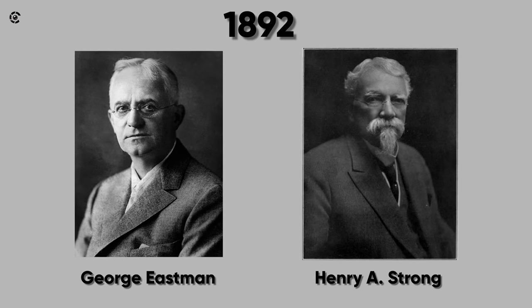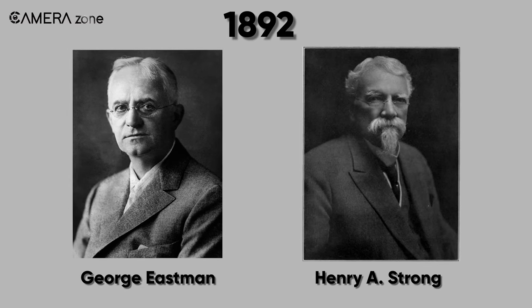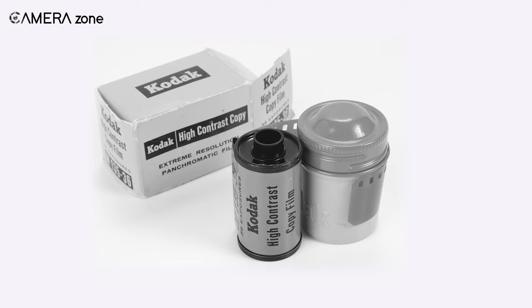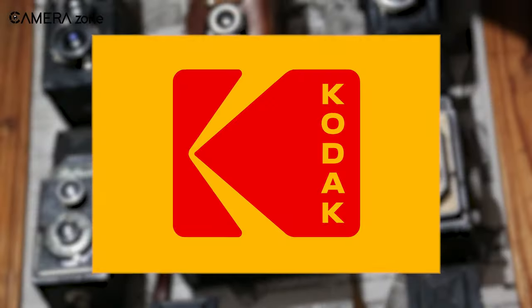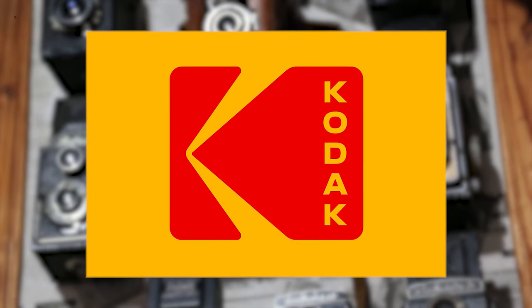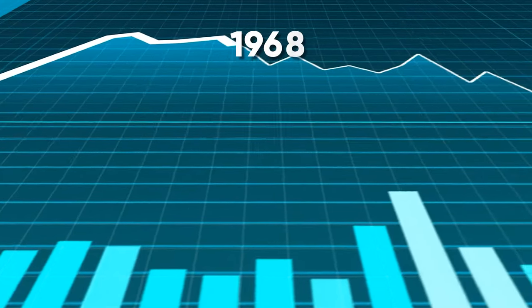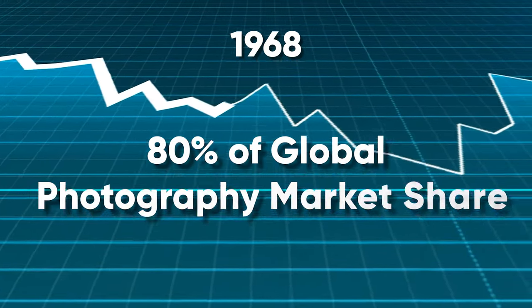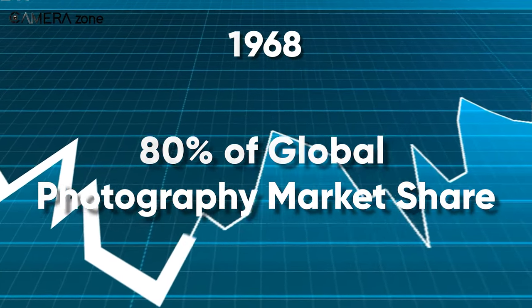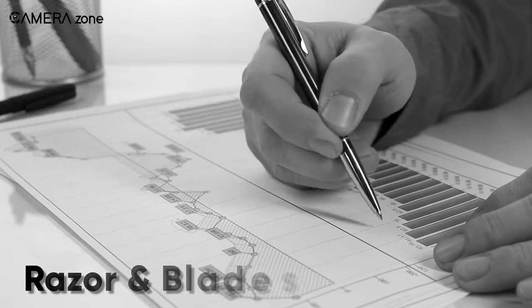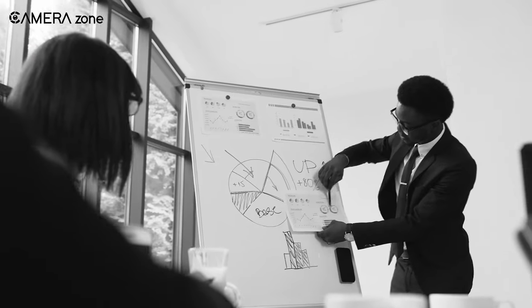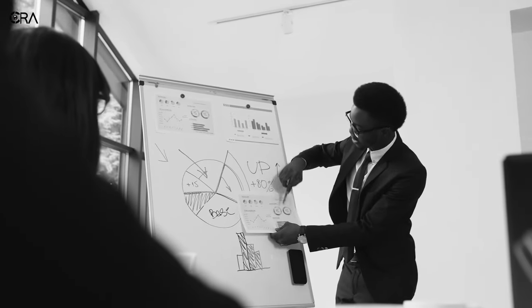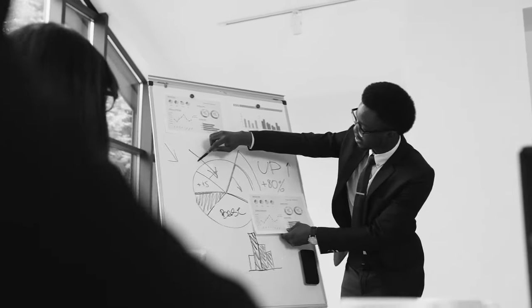Kodak was established by George Eastman and Henry A. Strong in 1892. For most of the 20th century, Kodak was the world's leading manufacturer of photographic film and was considered the world's undisputed leader in the photographic industry. By 1968, Kodak had almost 80% of the global photography market share. The company had a solid profit strategy called 'razor and blades,' which implies selling the razor at a very low price and then selling the blades at a higher price.